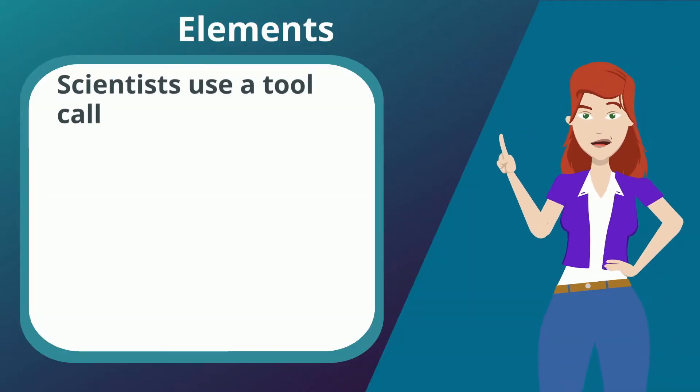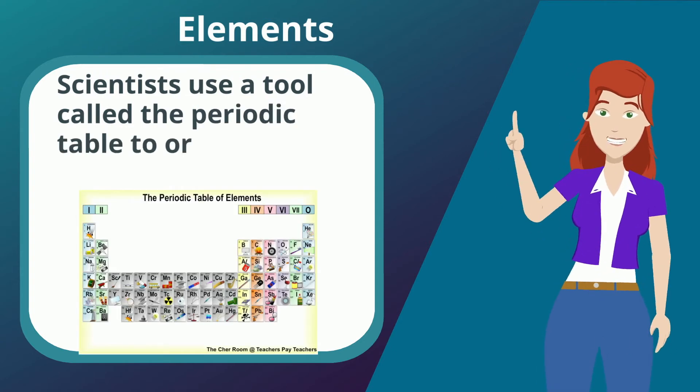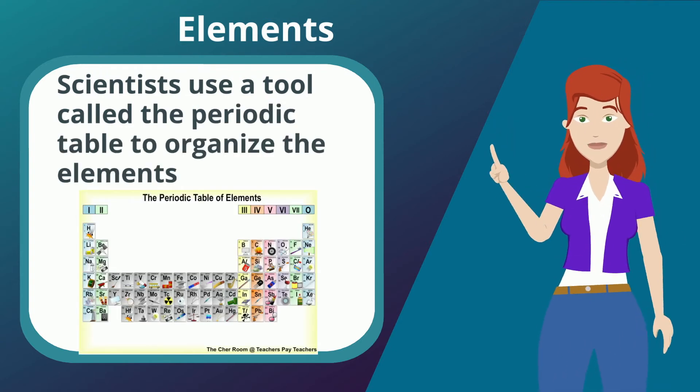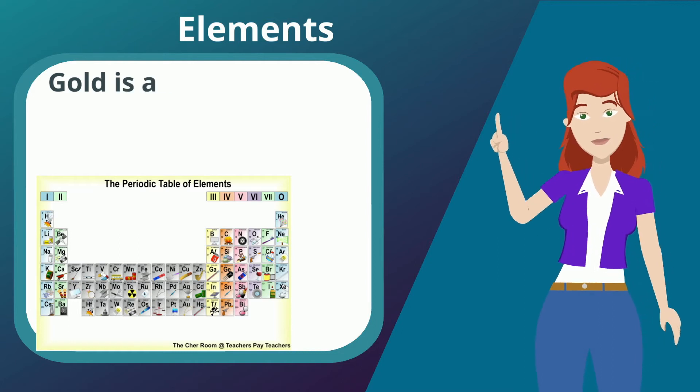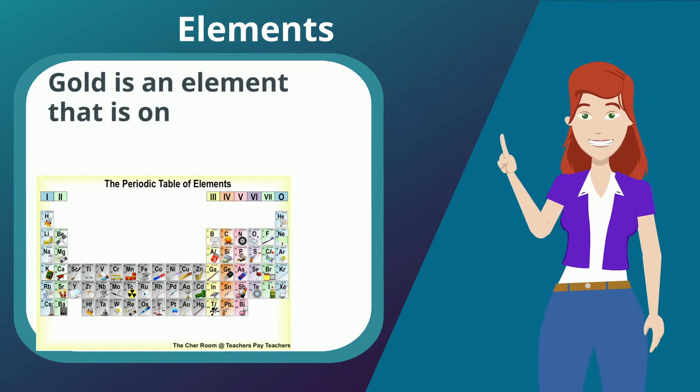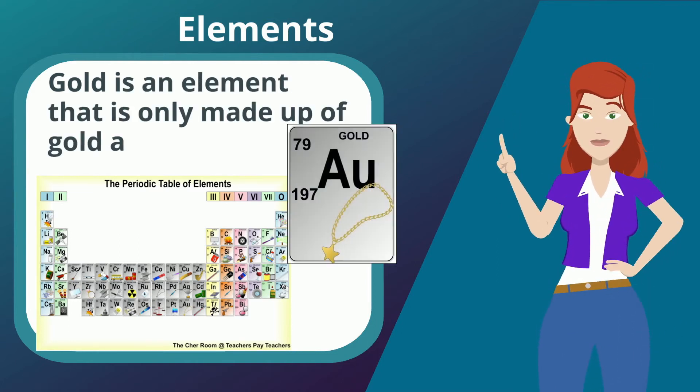Scientists use a tool called the periodic table to organize the elements. Gold is an element that is only made up of gold atoms.